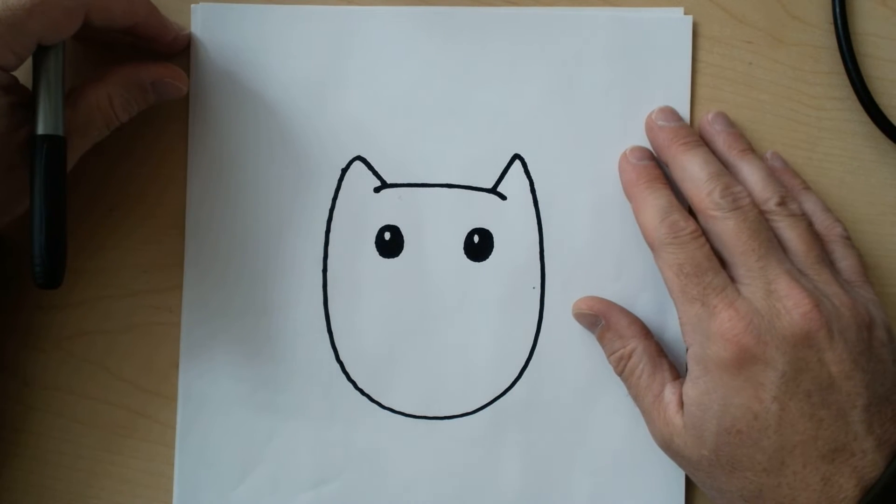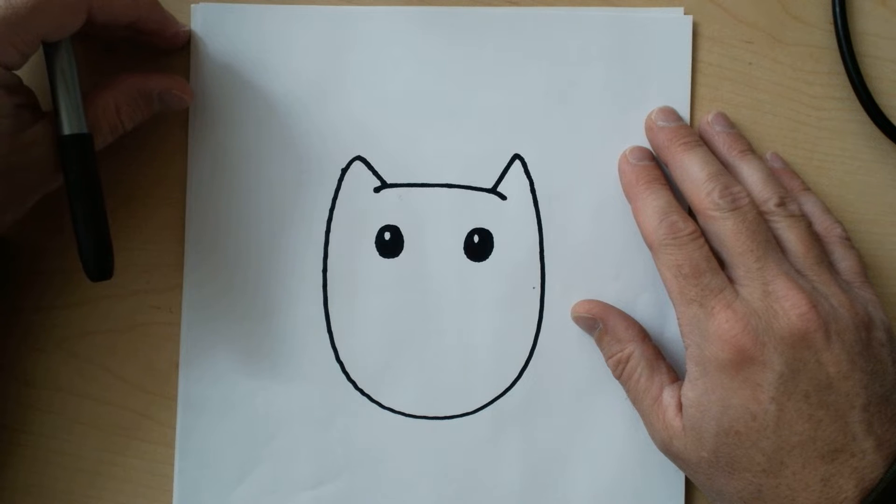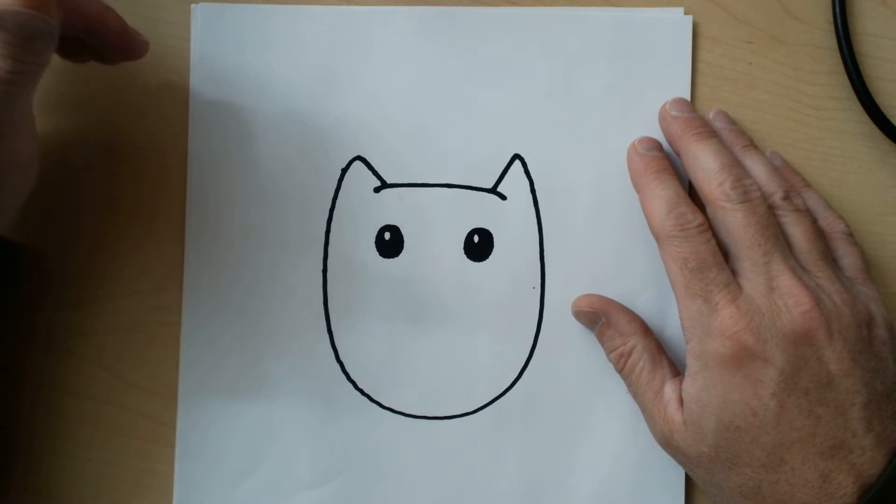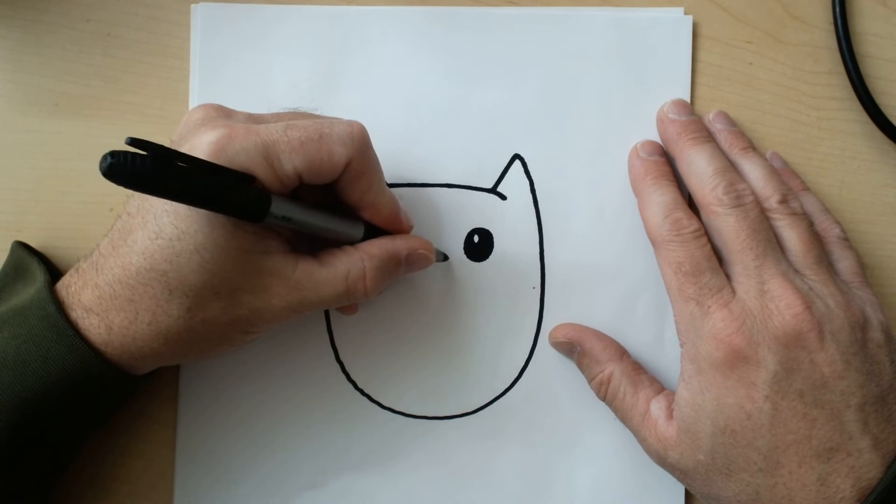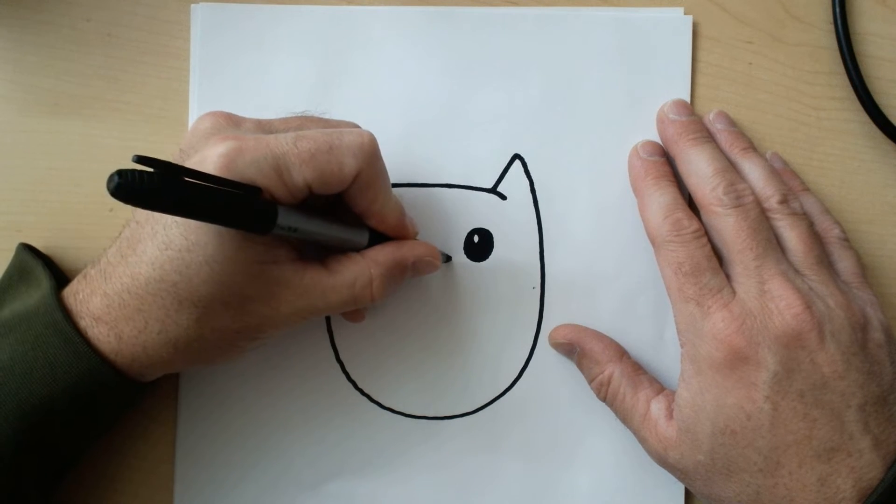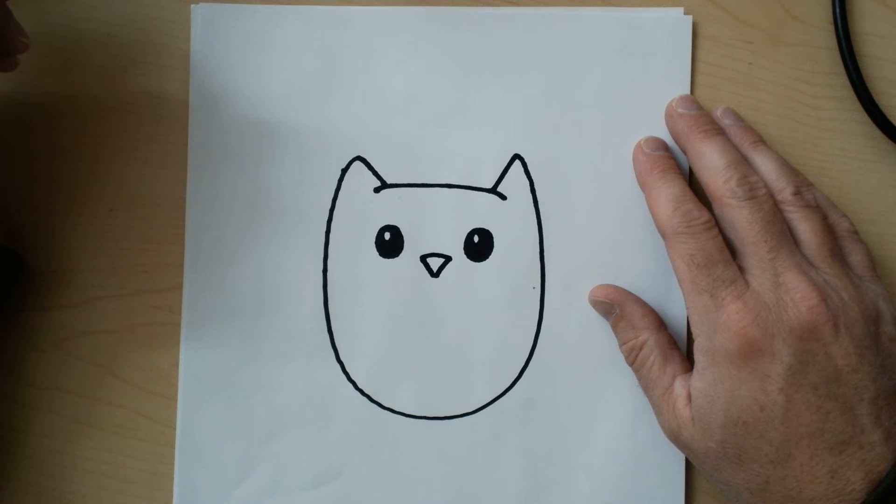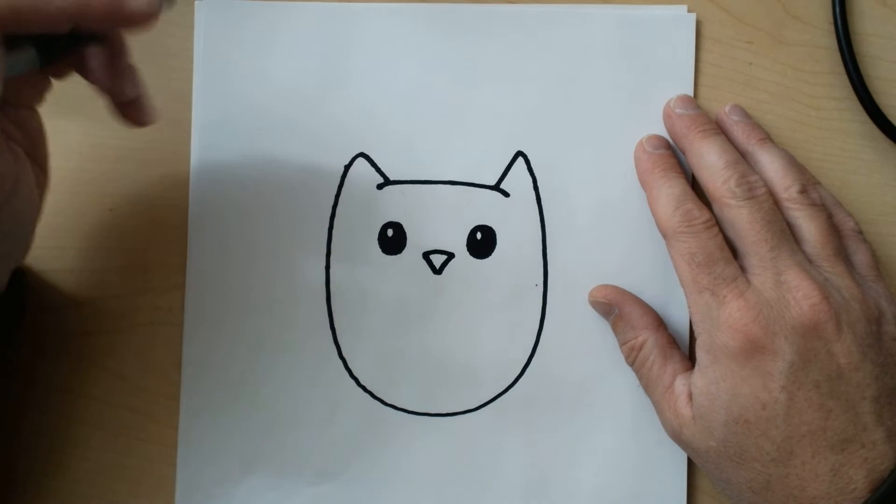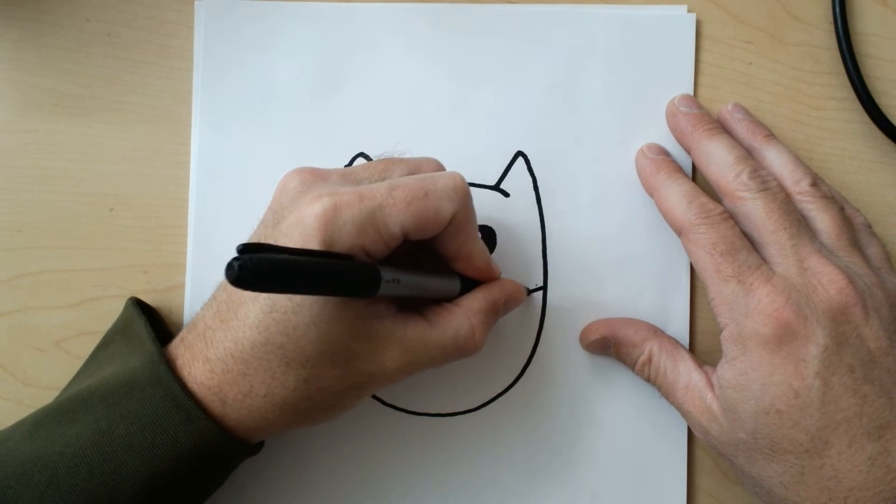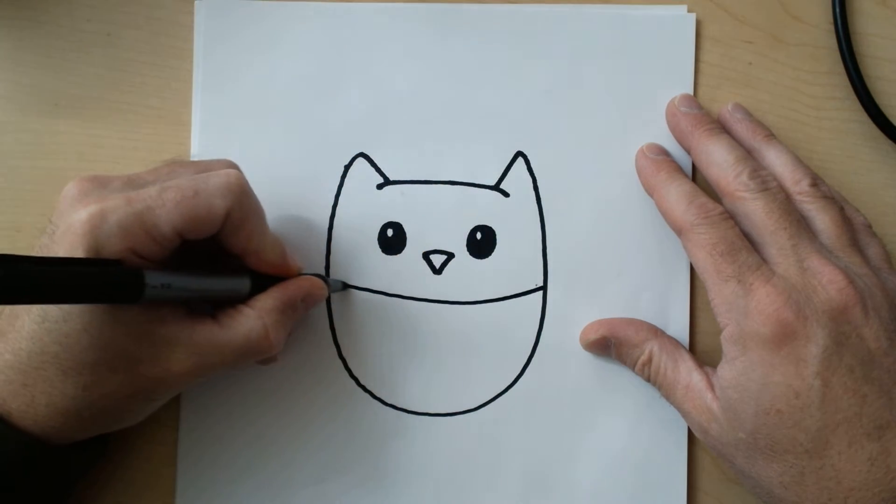My nose is just gonna be a tiny little triangle shape right in between the eyes. And because it's fall, I'm gonna put a scarf on this guy, so I'm gonna draw two curved lines. You don't have to be perfect.